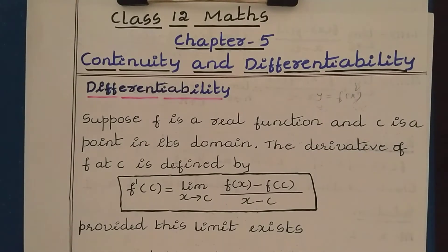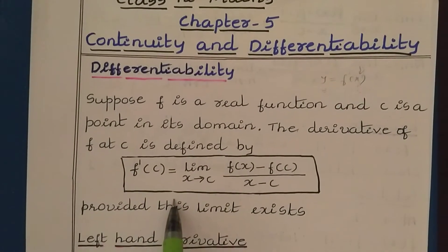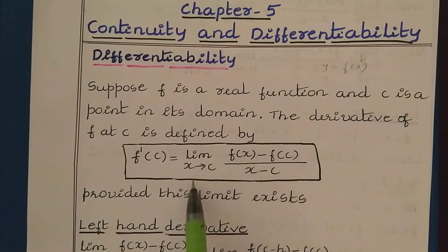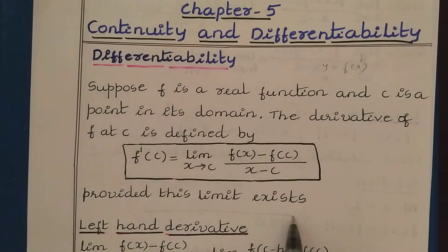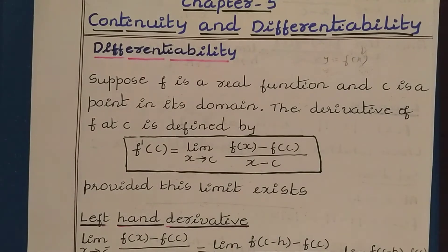Then, the derivative of the function f at point c we can define like this: f'(c) is equal to limit x tends to c, f(x) minus f(c) divided by x minus c, provided this limit exists. This limit existing means the left-hand side limit must be equal to the right-hand side limit. Then only we can find the derivative of the function.